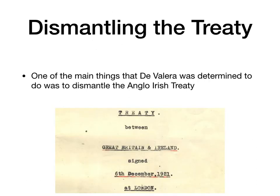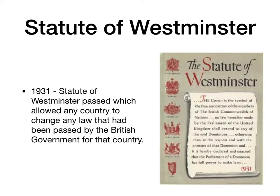The first thing that de Valera did when he came to power was he set about dismantling the Anglo-Irish treaty which had caused the civil war in Ireland. He was able to do this thanks to one of the achievements of Cumann na nGaedheal, which was the negotiation with other Commonwealth countries — the Statute of Westminster. The Statute of Westminster allowed any country to change any law that had been passed by the British government for that country.